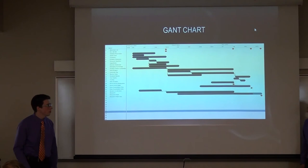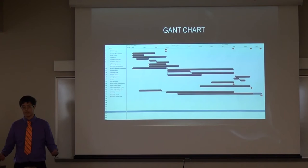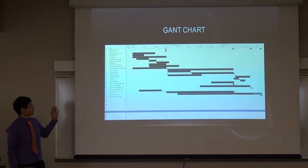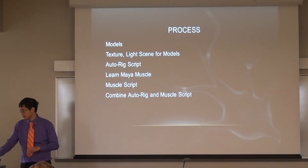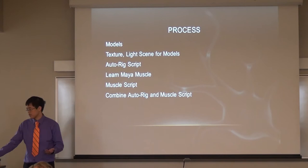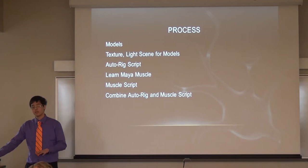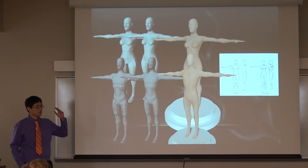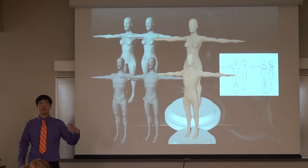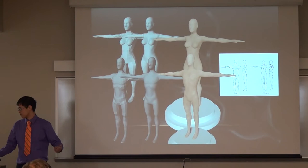Now William will talk about our pre-production. This is our Gantt chart showing basically what we planned throughout the semester — from go/no-go where we got our go, through to completion. A breakdown of the process: we created models, had to texture them, light the scenes, create auto-rig scripts, learn about Maya Muscle ourselves, then create the muscle scripts, and combine them together. Here are some images of our models — we had to redo some of the arms so that you can see more deformation for the muscles, giving them more defining biceps or triceps.